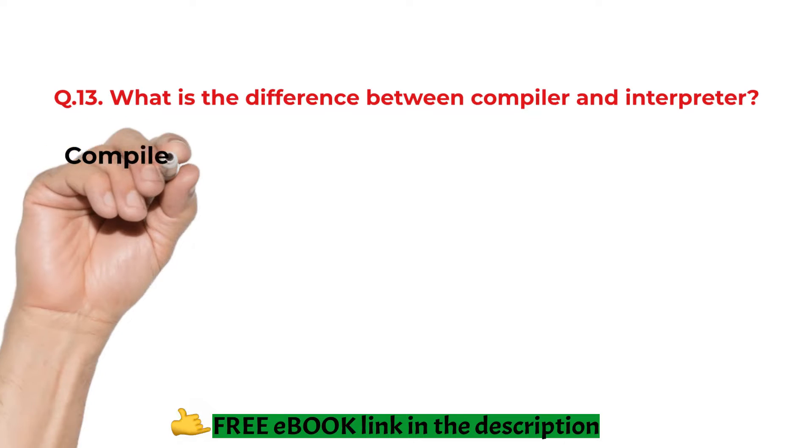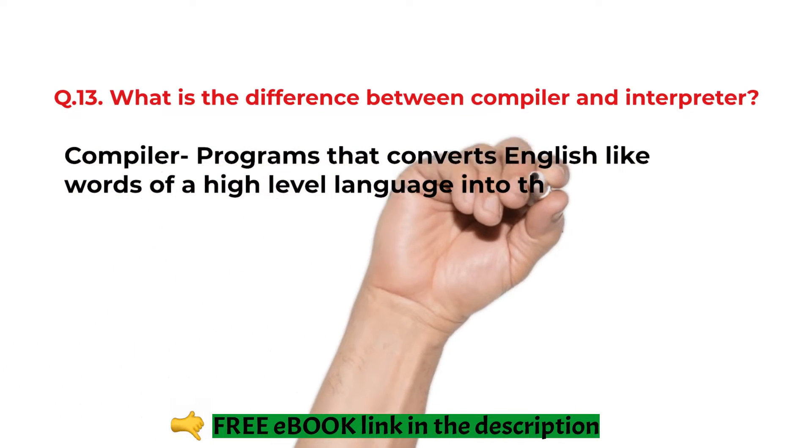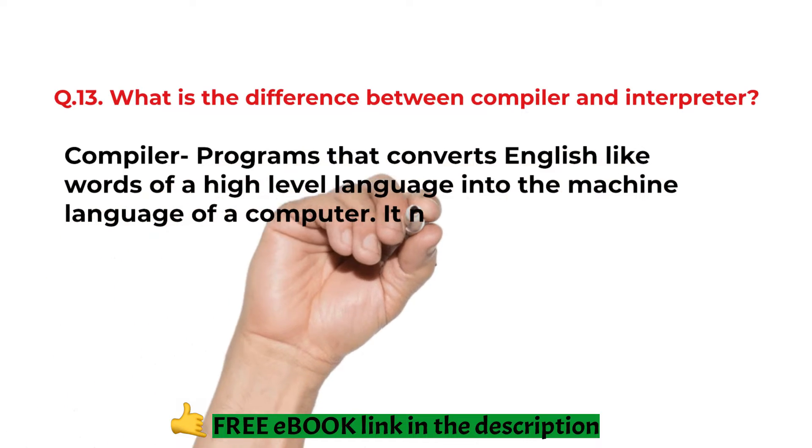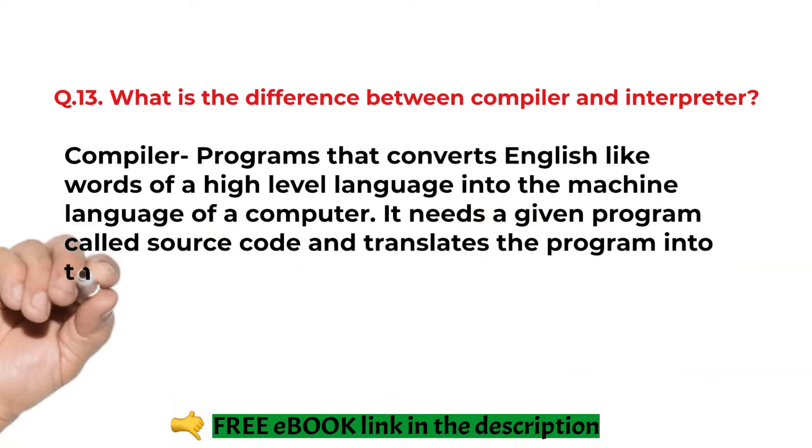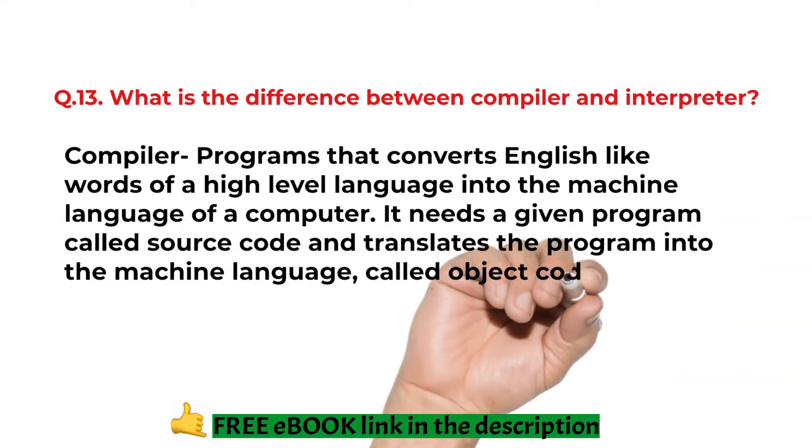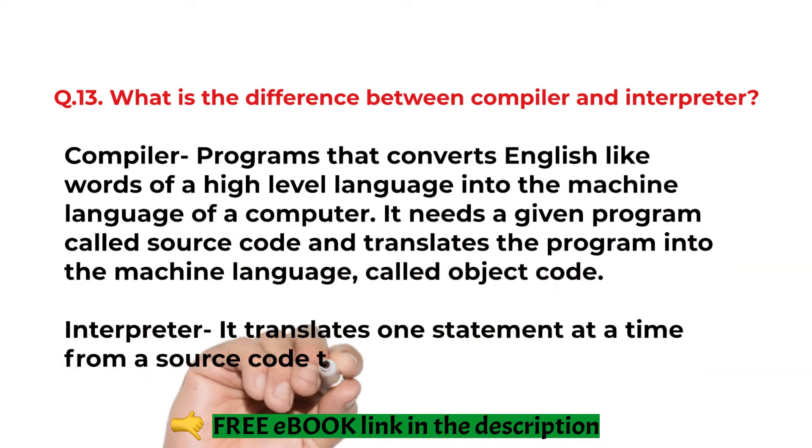What is the difference between the compiler and interpreter? Compiler programs that converts the English-like words of high-level language into the machine language of a computer. It needs a given program called a source code and translates the program into the machine language called object code. Interpreter translates one statement at a time from source code to an object code.